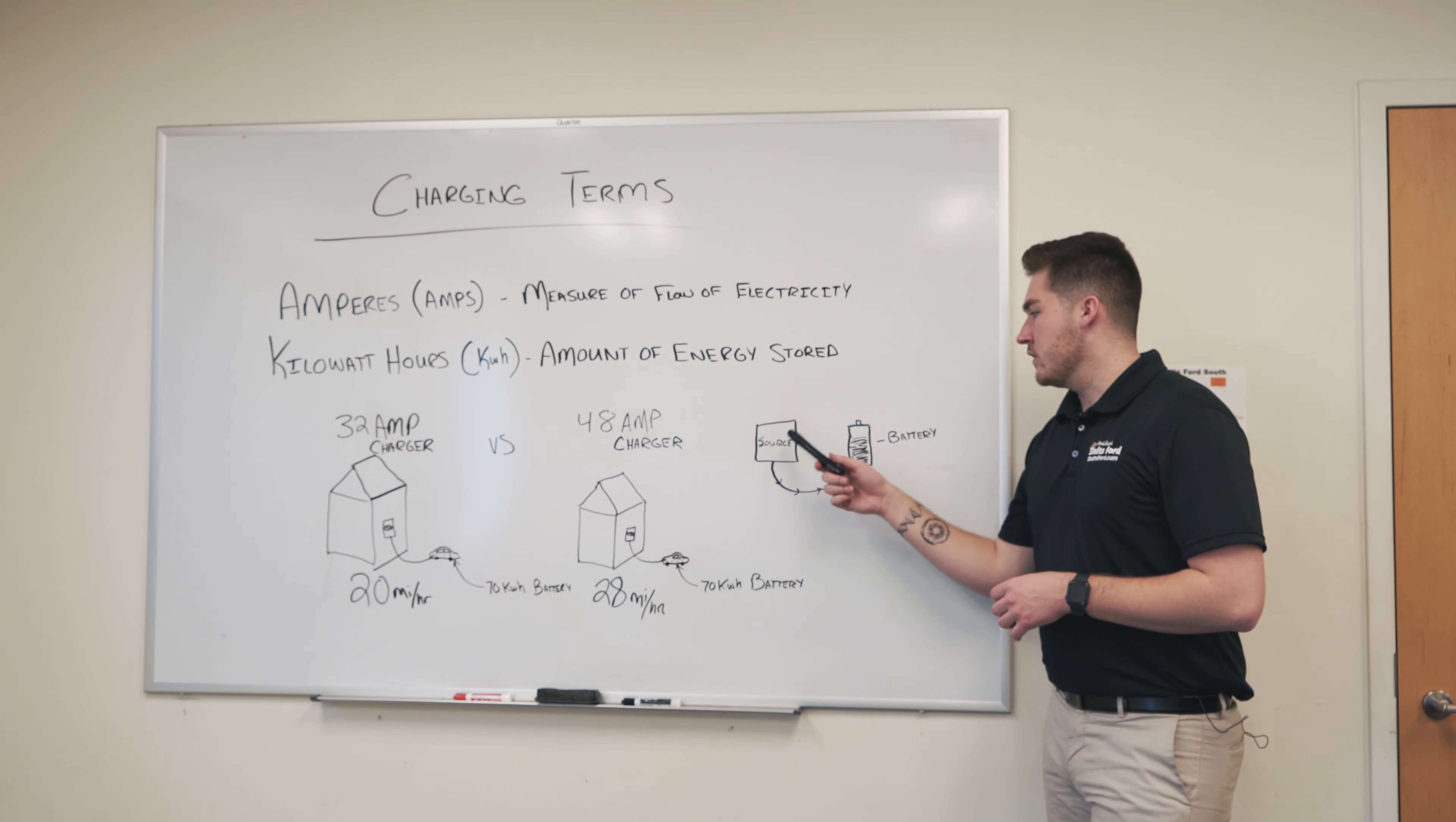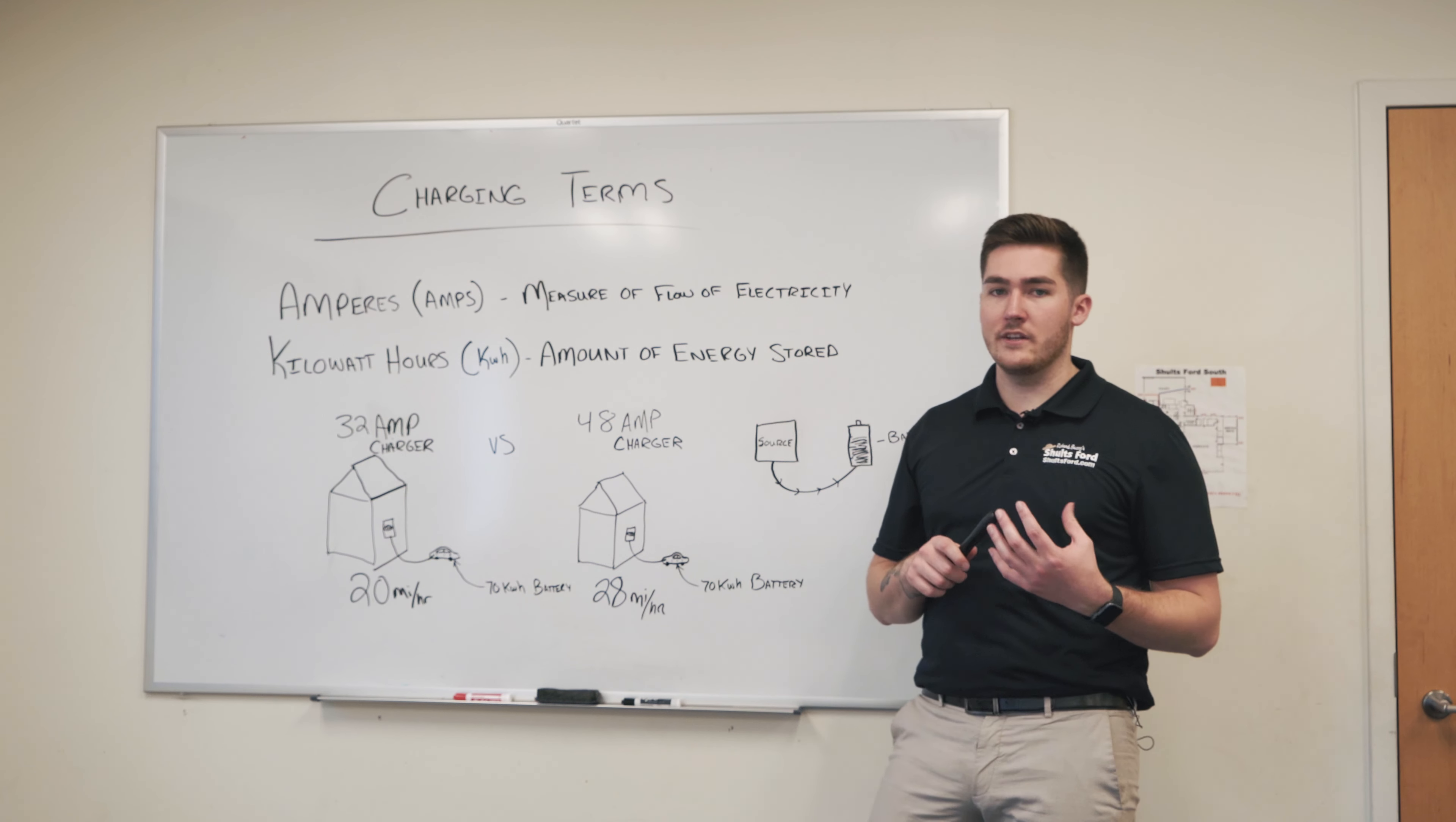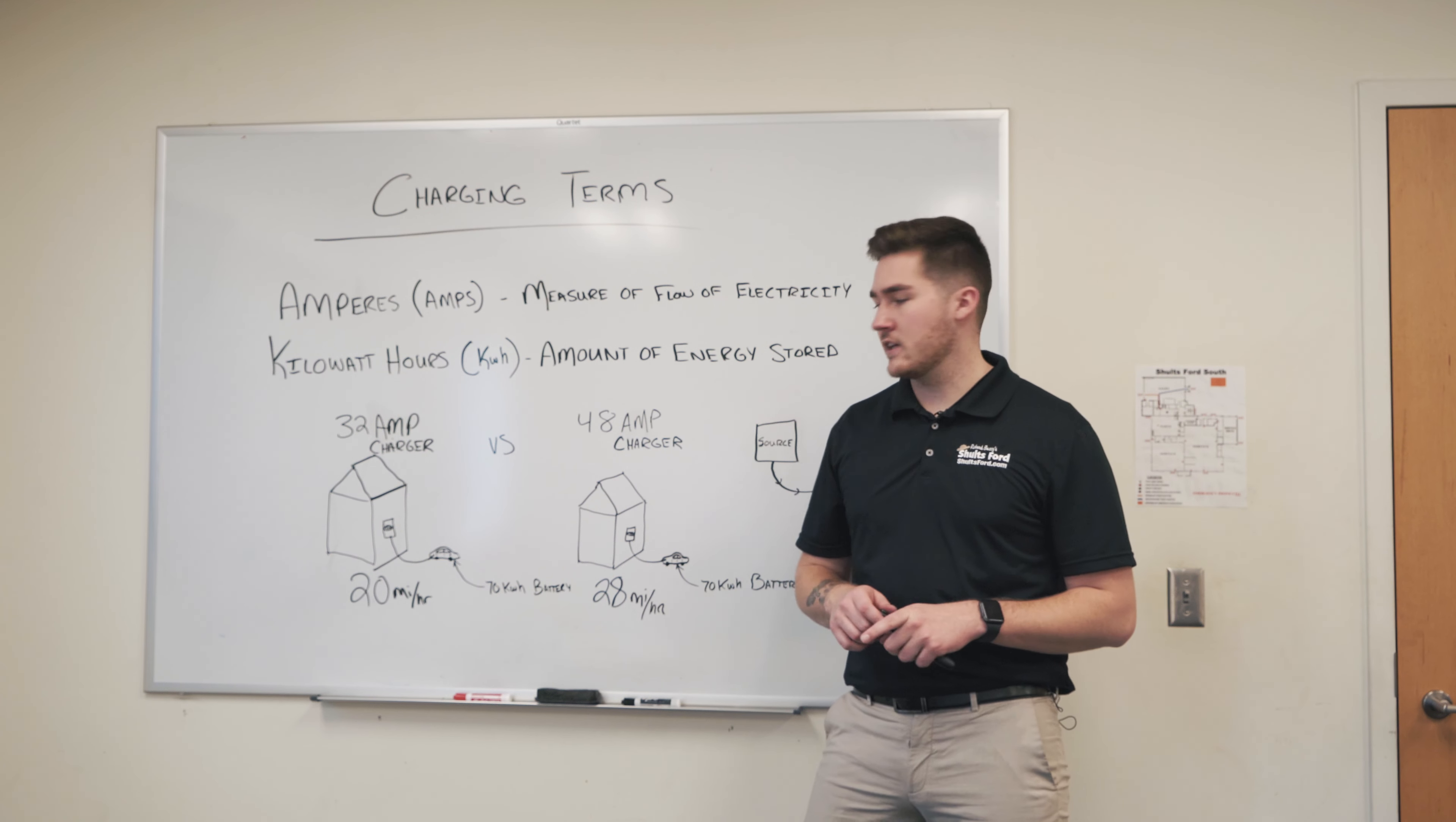So if you look at this diagram, your charger being plugged in, this flow of electricity to the battery, that's going to be measured in amps. And the size of the battery is going to be measured in kilowatt hours. So if you look at a standard range Mach-E, you're going to have about 70 usable kilowatt hours.